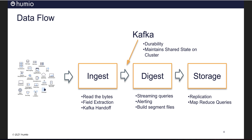Humio is a radically different approach to managing log data at scale. Here is a brief overview of what is going on underneath the hood. Consider the mass of data on the left. Humio starts with a variety of ways to get the data in — some of these, like Vector or Fluent D, you may already be using.